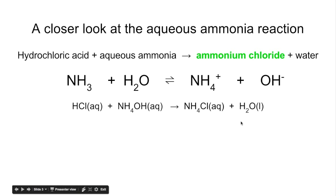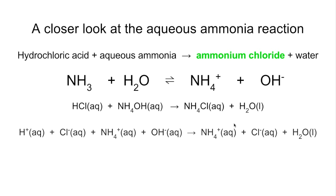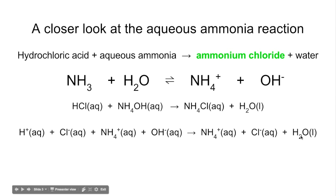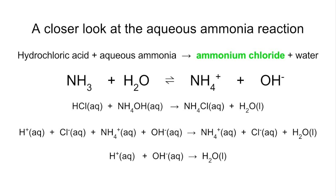Again, if we show the ions present we get H⁺ and Cl⁻ aqueous from the acid, and NH₄⁺ and OH⁻ ions from the alkali. The salt contains those ions, and water is shown as H₂O. We cancel what we can: chloride ions cancel, ammonium ions cancel, and we're left with the same equation as before — H⁺ + OH⁻ → H₂O. This is the ionic equation for this reaction because this is what's changed.